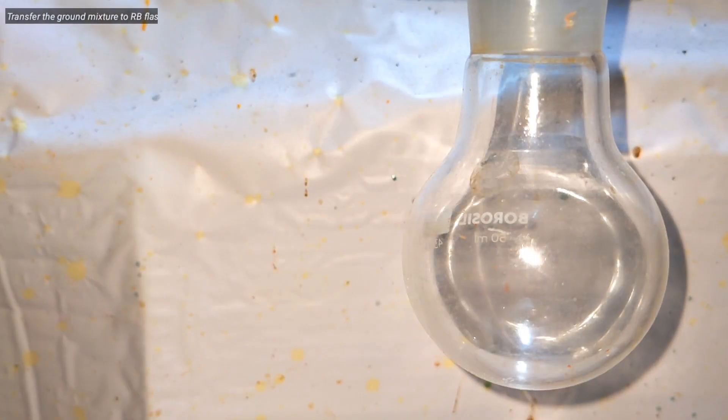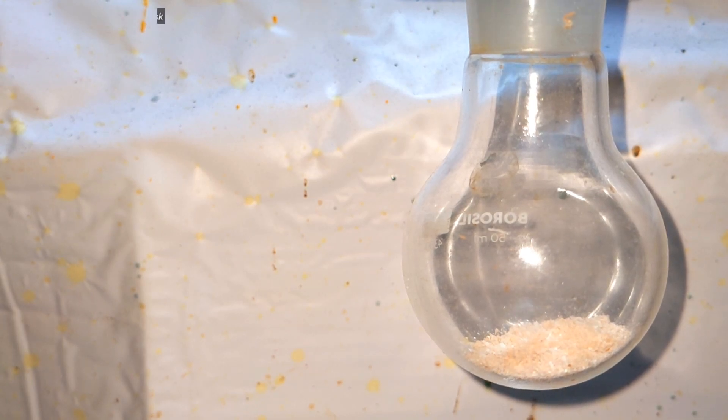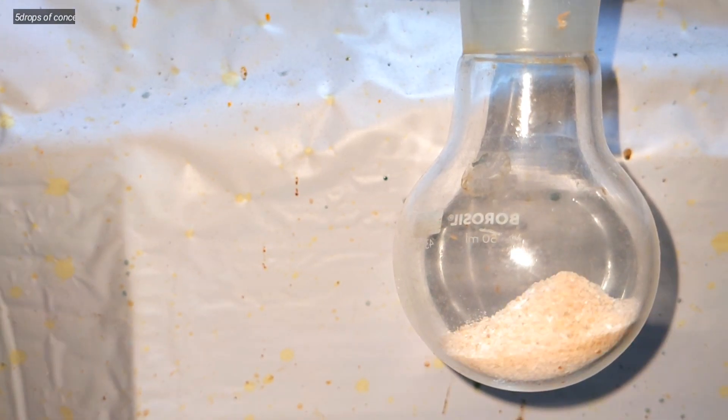Now take a small 50 milliliter round bottom flask and transfer the contents of the mortar into it. On top of that was added 5 drops of 98% concentrated sulfuric acid. Don't add too much sulfuric acid as it is not necessary.